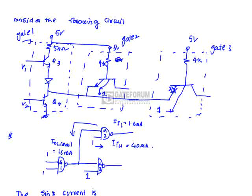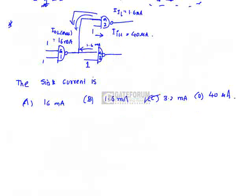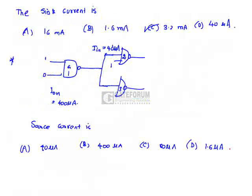Now determine the sink current: how much current passes through Q4 when the output of the first gate is low. The conditions for Gate 2 and Gate 3 are shown in the figure. If Gate 1 is in low state, current flows at 1.6 milliamps from one gate. Similarly, current also flows from the other gate at 1.6 milliamps. Because the output of Gate 1 is in zero state (IOL), the total is 3.2 milliamps. Hence, option C is correct.